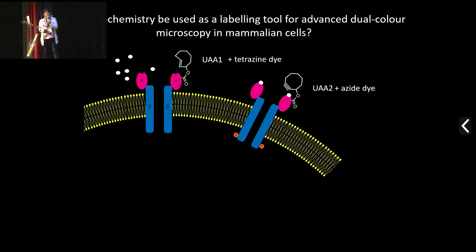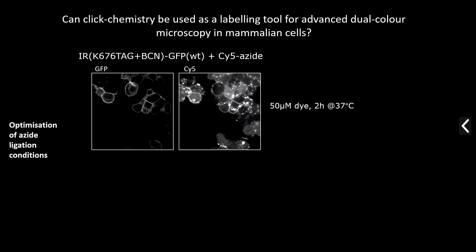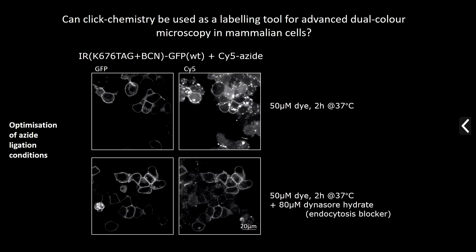We were curious to combine the two chemistries — tetrazine and azide ligation — to get dual-color labeling in mammalian cells. This was half successful: the tetrazine ligation worked well, showing insulin receptors on the surface of HEK cells, but the azide ligation under similar conditions gave us nothing. Because the azide ligation is much slower, we tried optimizing — increasing dye concentration and waiting two hours — but this resulted in a lot of non-specific labeling and endocytosis. Blocking endocytosis gave more specific labeling, but high dye concentrations and a two-hour wait is not ideal for fast live cell labeling.